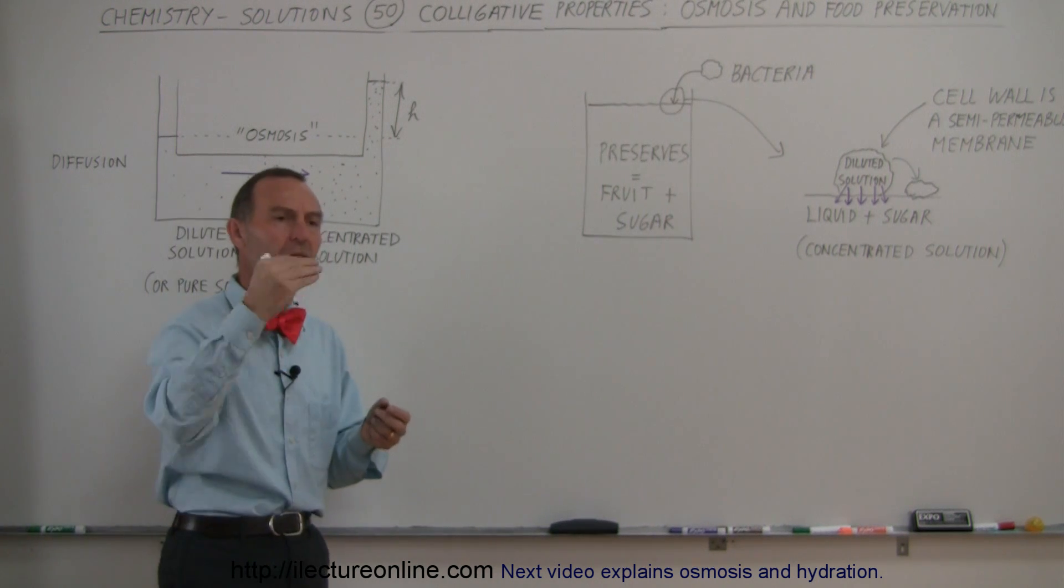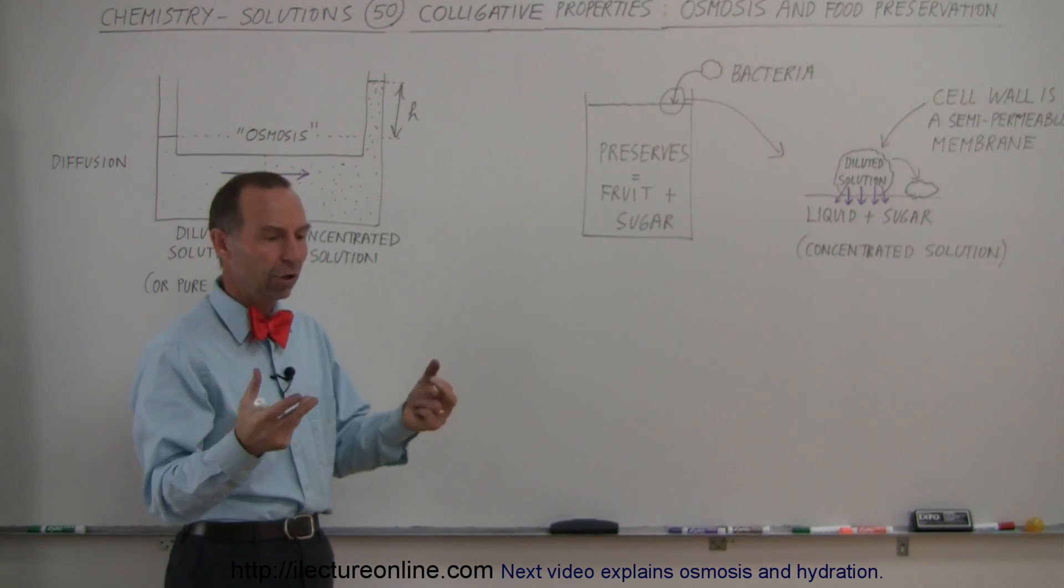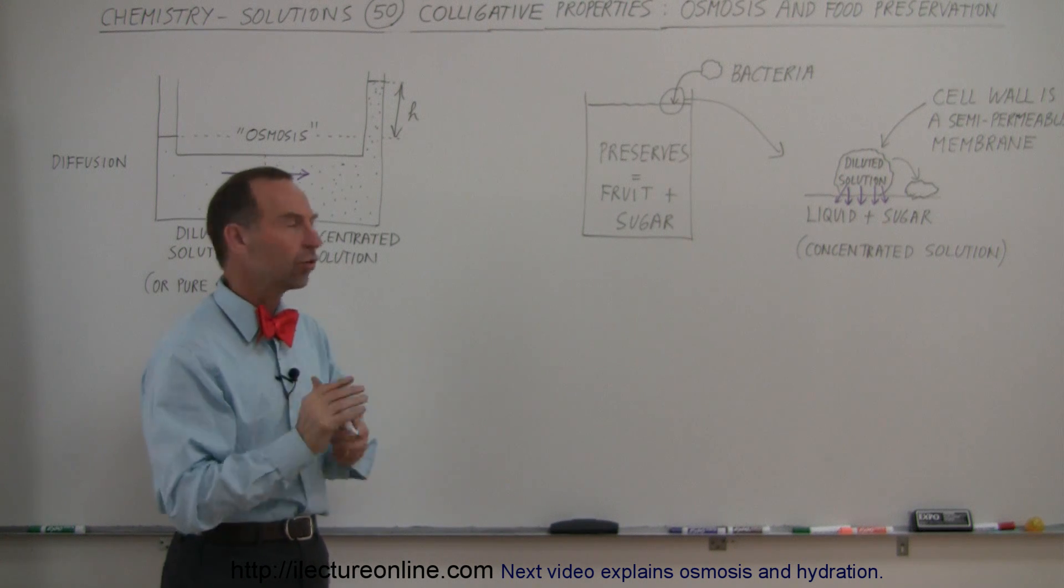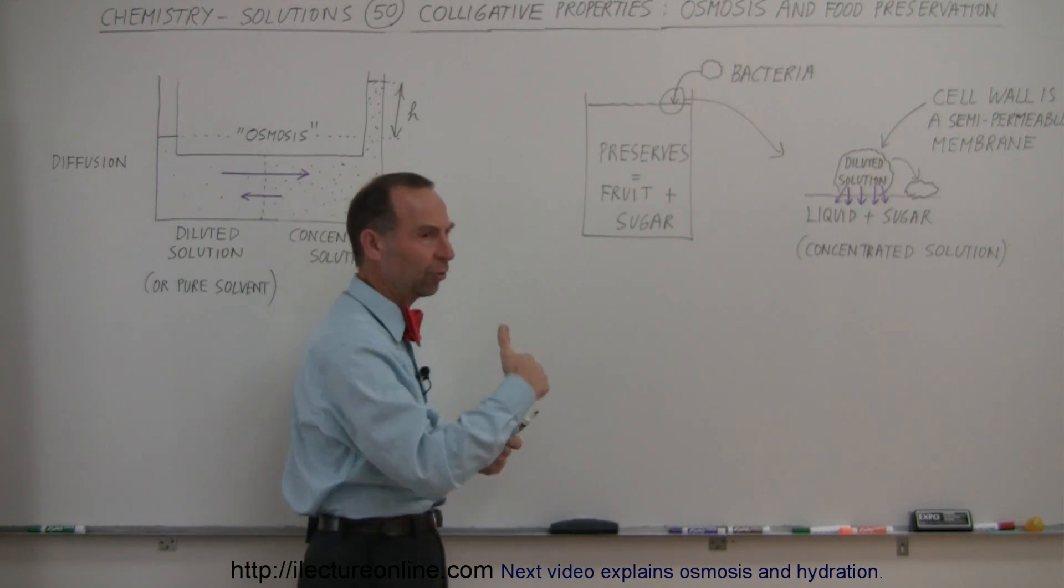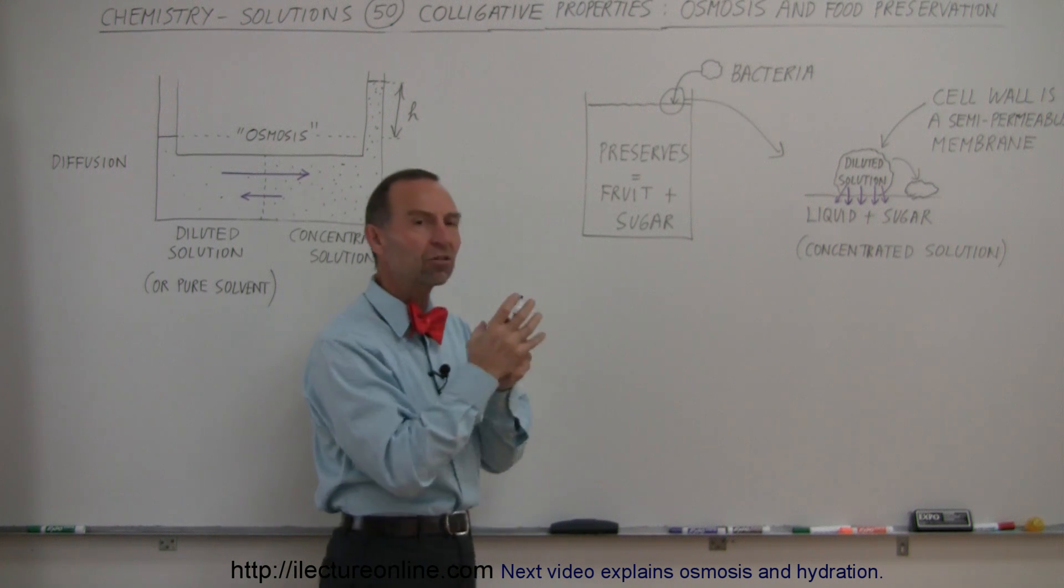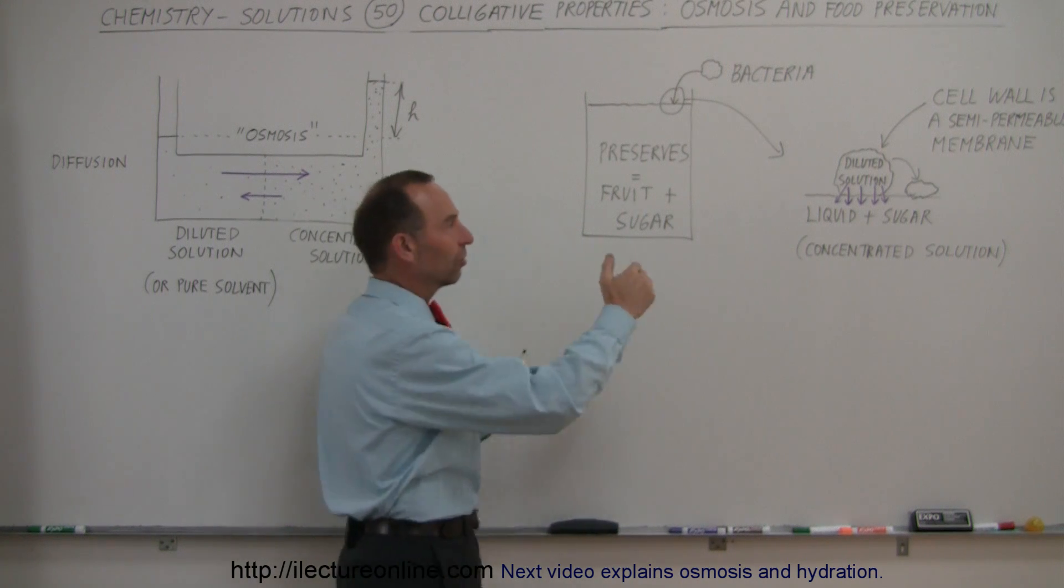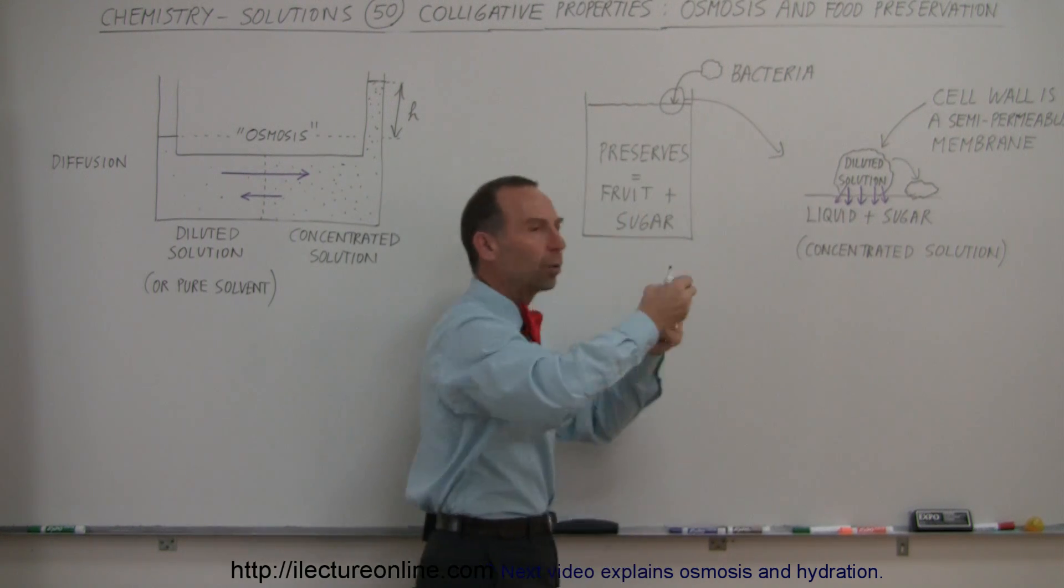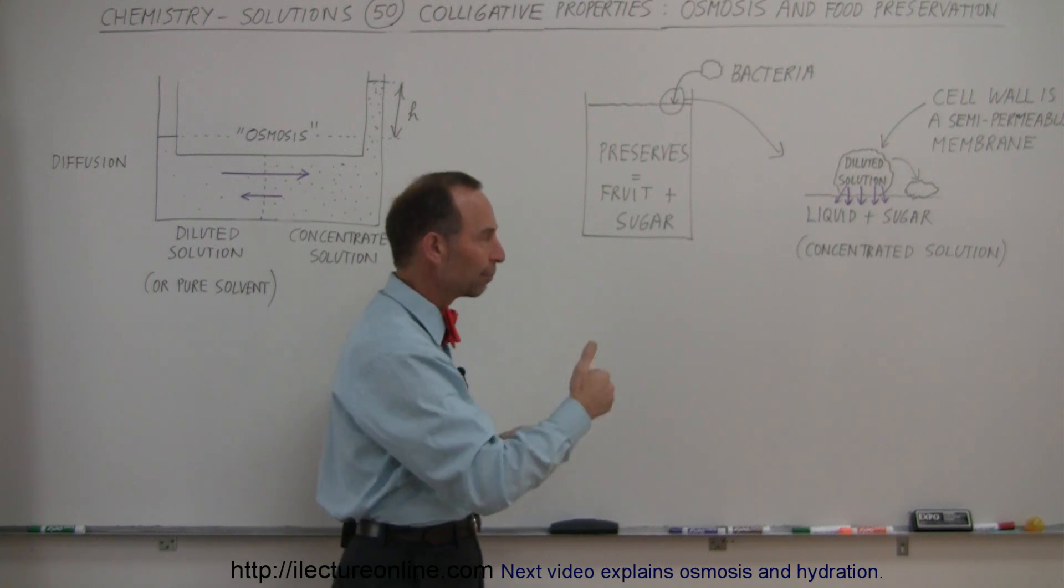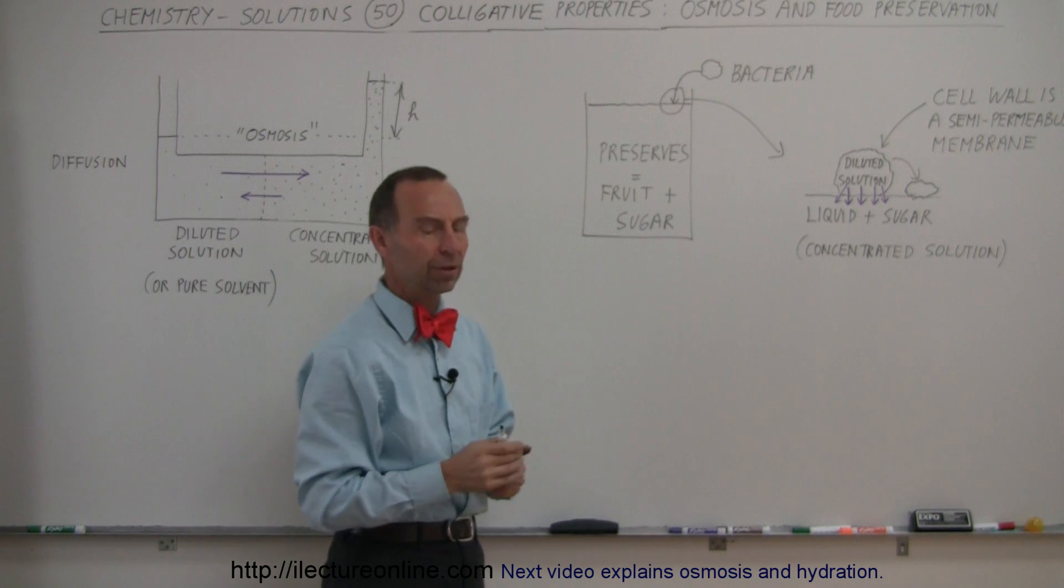Again, when you add a lot of salt to a product, like for example, in the old days, they used to salt a lot of the meats, put a lot of salt on them. What does the salt do? The salt mixes with water and produces a very high concentration solution. Then any bacteria that comes near it, because of the semipermeable membrane, water will seep out of the bacteria into the salted food, and bacteria will just shrivel and die.